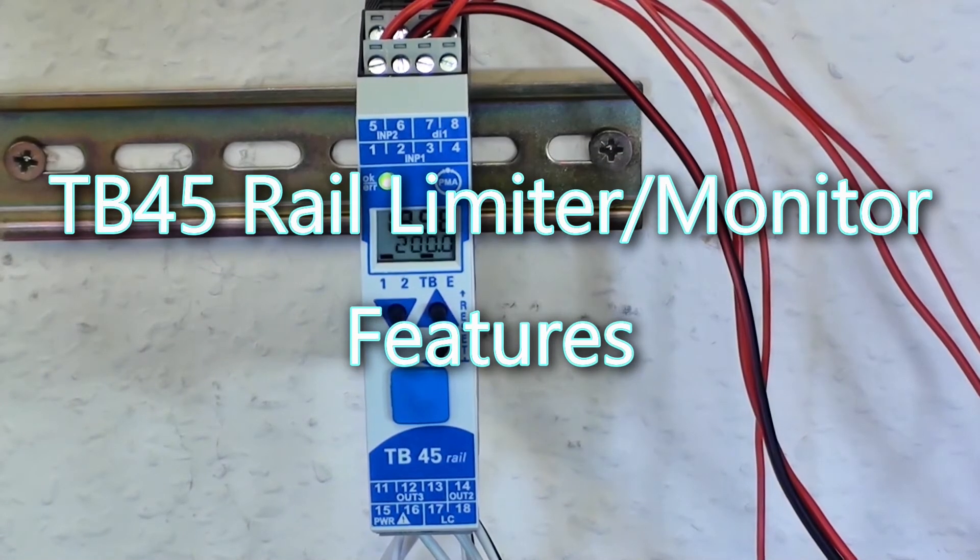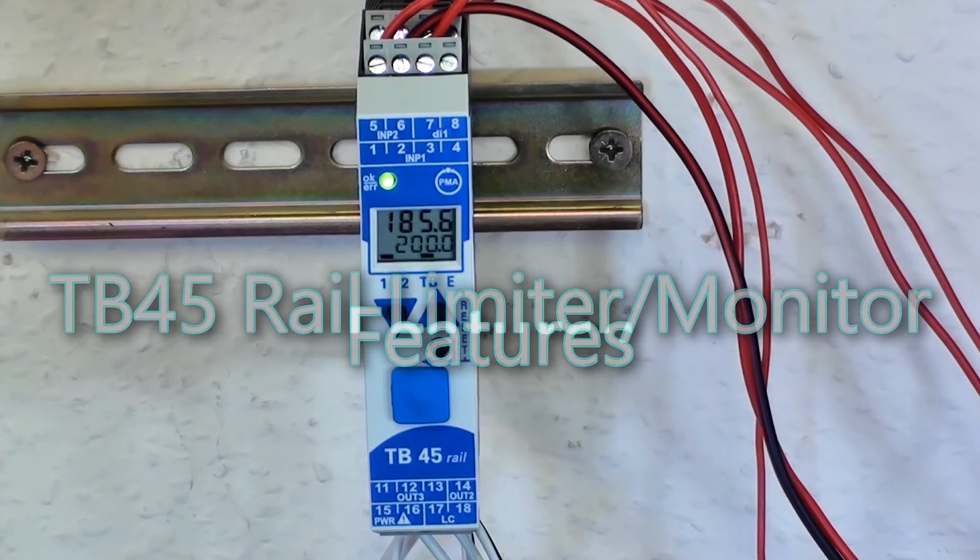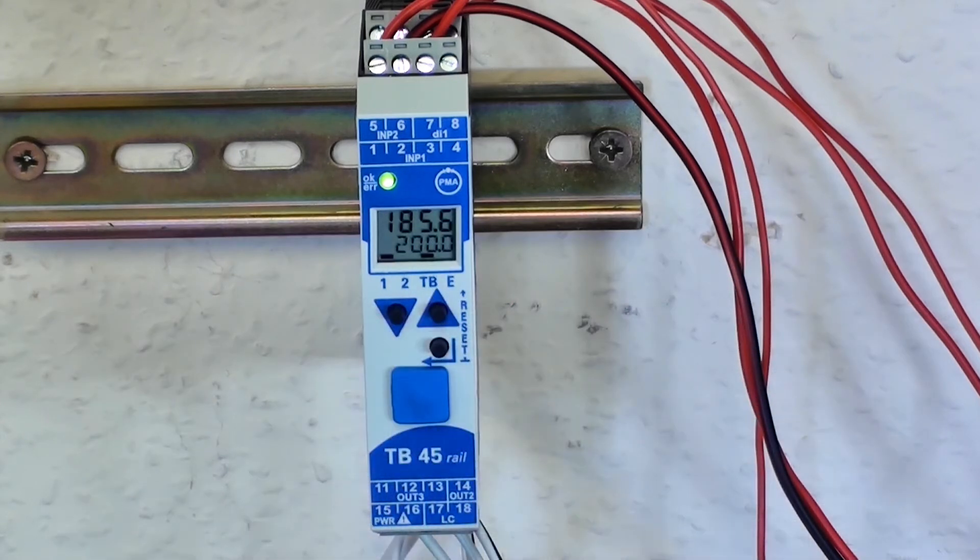TB45 is a DIN rail mounted temperature safety device. It's available in two versions: model TB45-1 and TB45-2. Both models provide safety cutout where independent limit switching is required for over or under temperature applications.